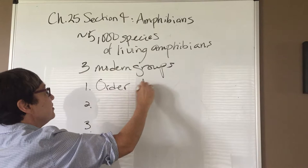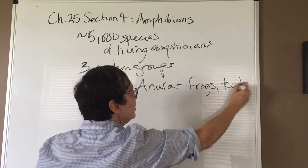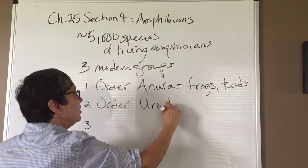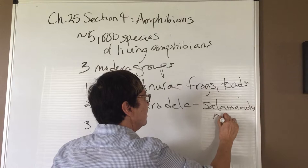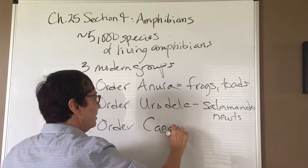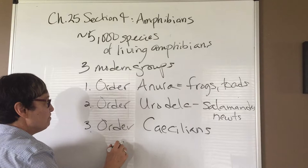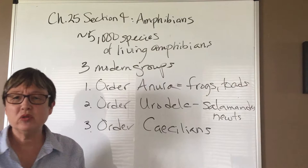The first order, and probably the most familiar, is order Anura — the frogs and toads. The second group, Urodela, are the salamanders and newts. Lastly, a group you're probably not familiar with at all are the caecilians, which lack legs, are mostly blind, are worm-like in shape, and mostly burrow in the soil.